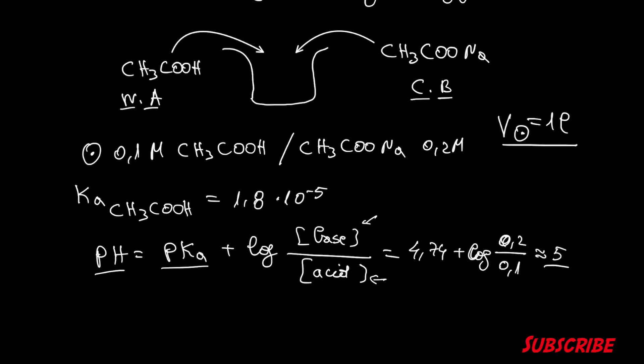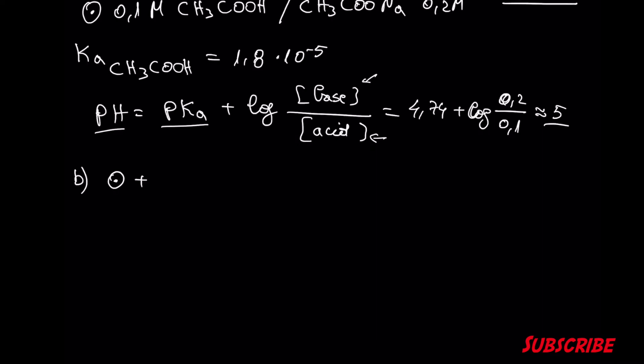What happens to the pH if we add 100 milliliters of sodium hydroxide 0.1 molar? In this case, we have to consider two steps. The first step is the stoichiometrical calculation, which includes moles. The second step is the equilibrium calculation, where we are going to use the Henderson-Hasselbalch equation again to find the pH. What is going to happen in our solution if we add base? It is going to consume some weak acid in a stoichiometrical way and convert it to its own conjugated base in order to preserve the pH.